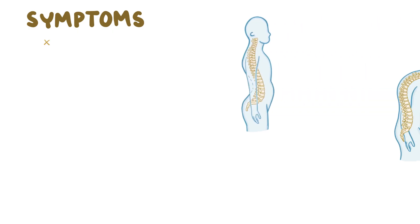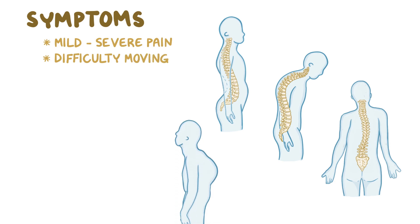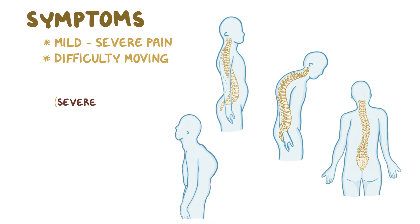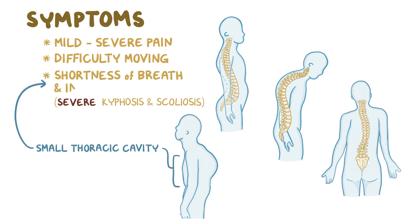In terms of symptoms, spine deformities can cause mild to severe pain, and the stiffened spine can make it difficult to move. In severe kyphosis and scoliosis, the small thoracic cavity can lead to shortness of breath and an inability to exercise.